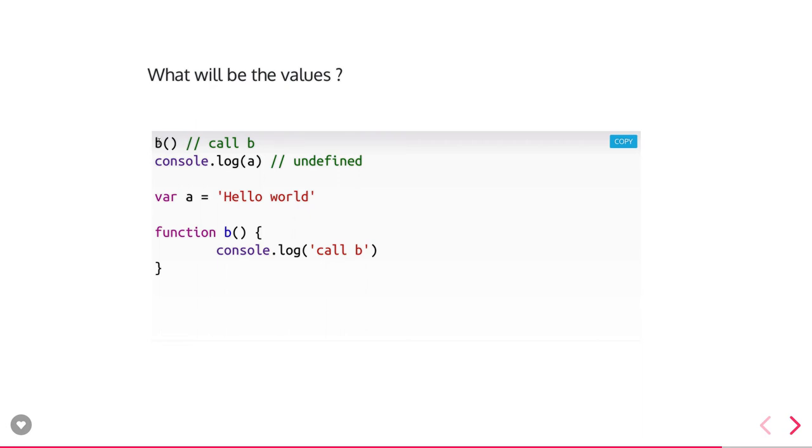What should be the value when you call b? You will get the call because functions are hoisted in a particular file. Even when you're calling that function, the definition is still there so you will get the value. But the same is not applied to variables. If I try to print console.log a, I will get undefined even though a is defined in the same scope. Functions are hoisted, variables are also hoisted, but functions get preference. Here you're not getting any error because this file knows that a is defined in the same file, but doesn't have a value right now.